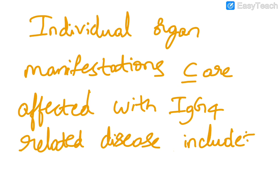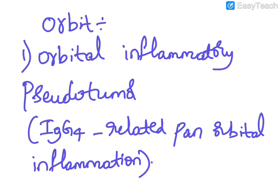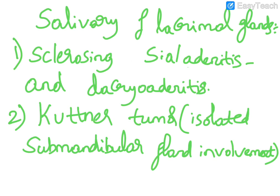These include, first of all, orbital manifestations which include orbital inflammatory pseudotumor, causing IgG4 related pan-orbital inflammation. Then coming to salivary and lacrimal glands.